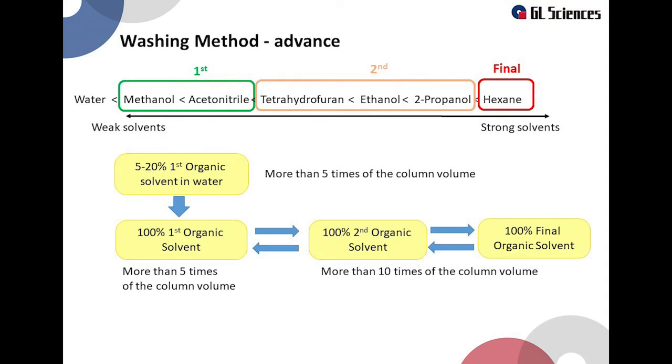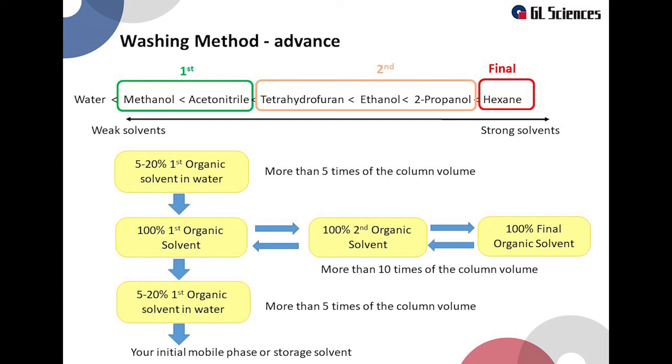The same applies when flowing the hexane from the final choice. After flowing the mixed solution of water and the organic solvent of the first choice and flowing 100% the first choice solvent, flow the second choice solvent. Follow up with using the final choice detergent. Then return to the organic solvent of the second choice solvent and the first choice solvent. Please note that hexane only mixes with the second group solvents. Return to the mixture of organic solvent and water, and let it run at least 5 times of column volume. After that, use the column under the usual analytical conditions and check whether the column has recovered or not.